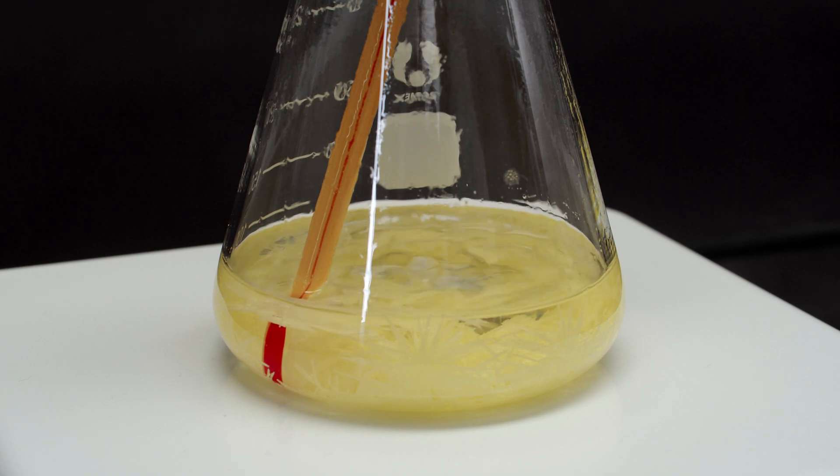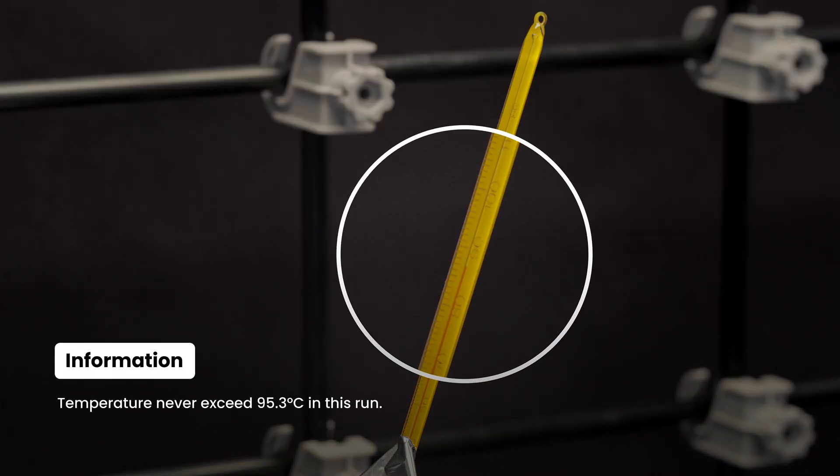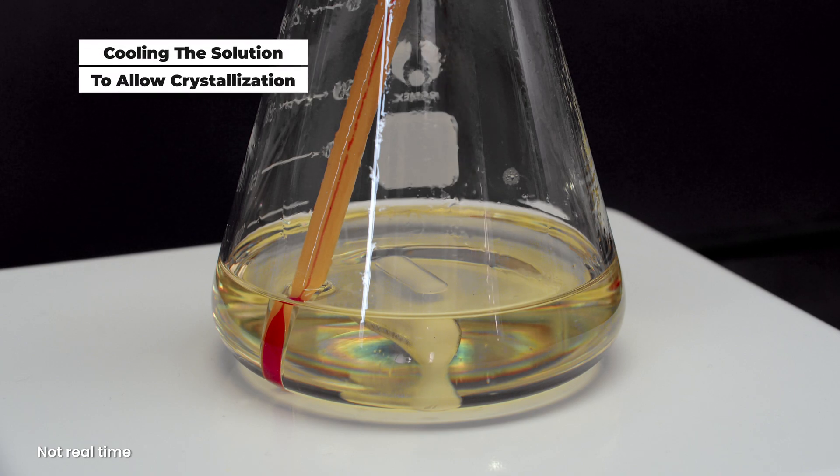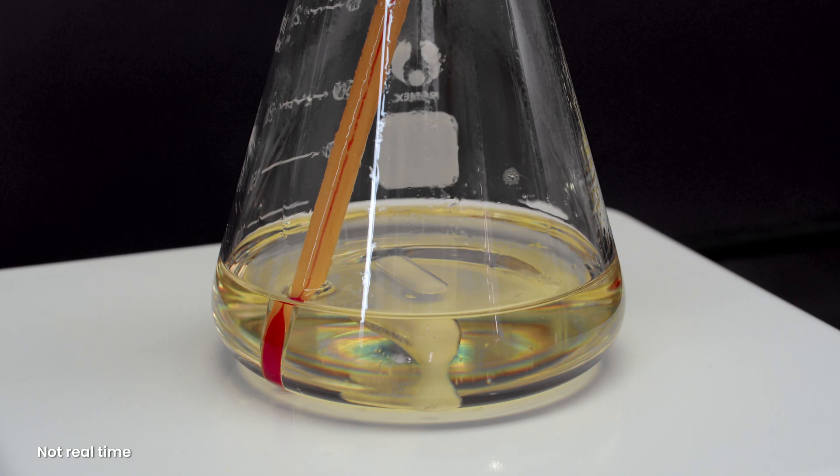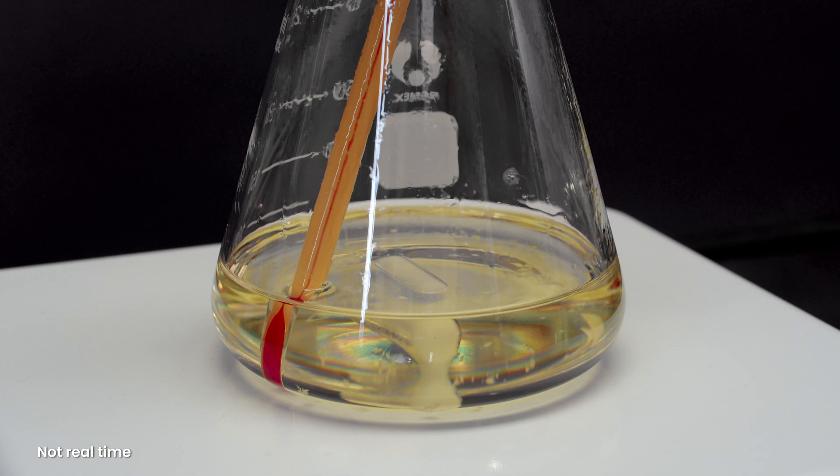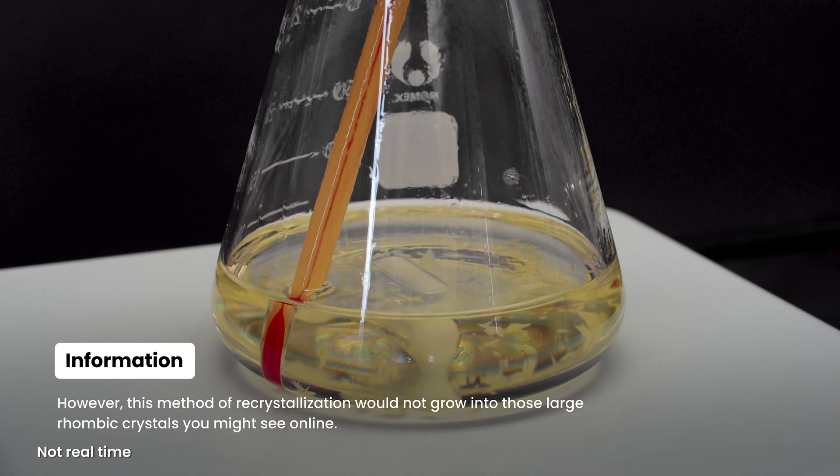For the second run, I reheated the solution again to dissolve the sulfur, and carefully monitored the temperature to avoid overheating. After all sulfur crystals dissolve, the remaining solution is allowed to cool. Rhombic crystals of sulfur will start forming as it cools. You can see the formation of crystals. They're much shorter in length. They look much more like a chunk than a needle.